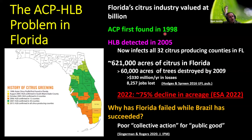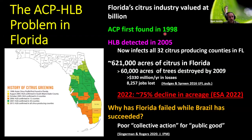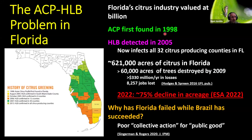An interesting study was done by Singerman and Rogers — entomologists in Florida. The question they asked was: why did Florida do a bad job managing Huanglongbing and Asian citrus psyllid when another country with similar growing conditions and the same problem has done really well? Their conclusions were that it was basically poor collective action for the public good by the citrus-growing community — too many independent efforts to manage the problem at the farm level rather than farmers getting together for a more area-wide approach early on. And that's something we've been trying to avoid here in California.